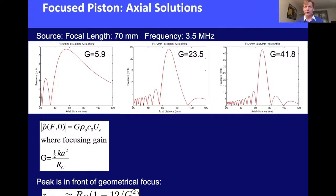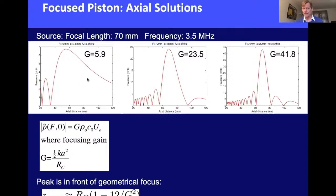Increasing the aperture to 20 mm raises the gain to about 42, producing a high tight peak almost exactly at 70 mm. The focal spot — defined by the half-pressure points — shrinks from covering more than 80 mm axially with the small aperture to about 20 mm with the large aperture. Larger transducers give much tighter focal spots for a focused transducer.